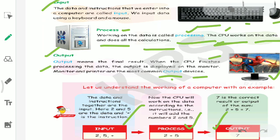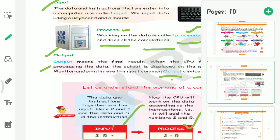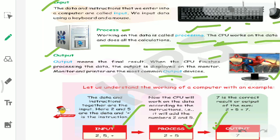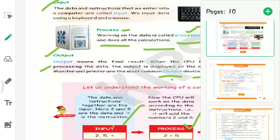One more example is here: 2 plus 5. Computer processes 2 plus 5, output is 7. So computer works on three steps: input, process, output.